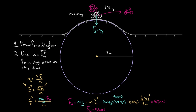To recap: when solving centripetal force problems, draw a quality force diagram. Then use Newton's second law for one direction at a time. If you use the centripetal direction — the direction pointed radially into the circle — the acceleration in that direction is V squared over R. Only plug in forces directed radially into or out of the circle. Forces pointing into the circle are positive; forces pointing out of the circle are negative.